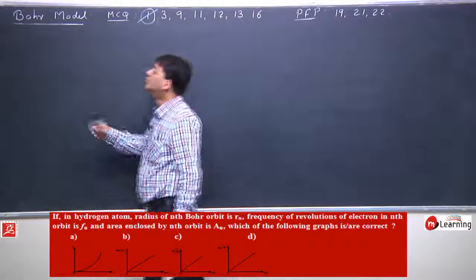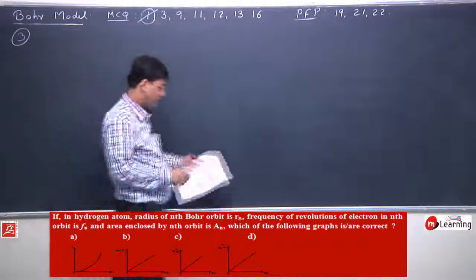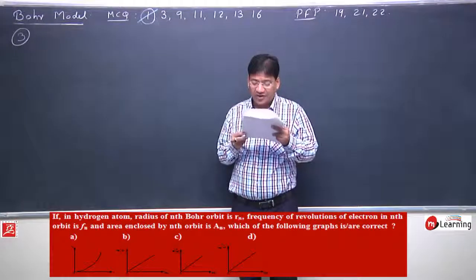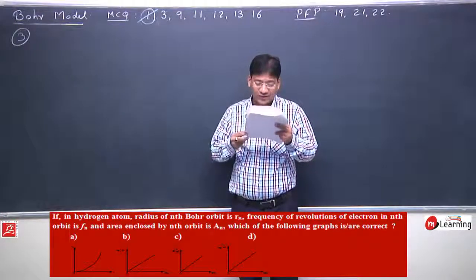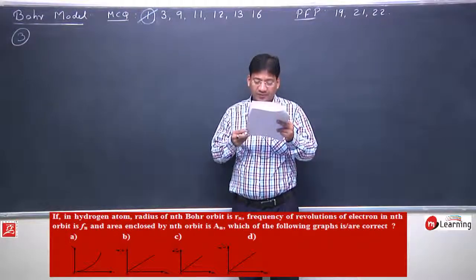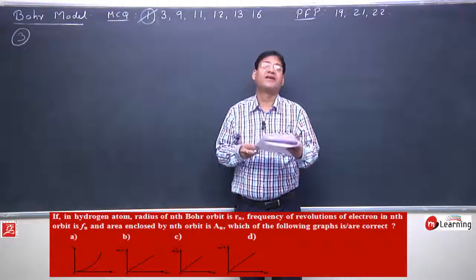Let us move on to third objective. If in hydrogen atom, radius of nth orbital is rn, frequency of revolution of electron in nth orbital is fn, and the area enclosed by nth orbit is An, then which of the following graph is correct?